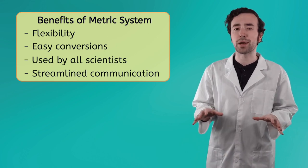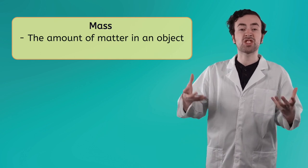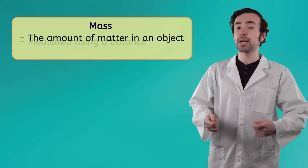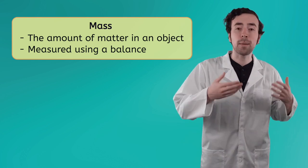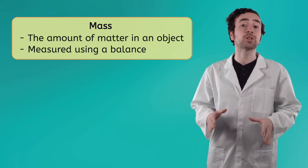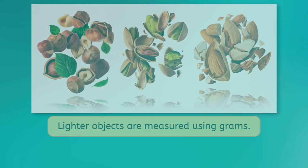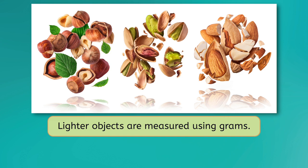All right, now that we know the benefits of the metric system and we understand it a little better, let's discuss how to use it. First up: mass. Mass is the amount of matter or stuff in an object. Scientists measure mass by a tool called a balance. There's lots of different kinds of balances, but by far the easiest one to use is a digital balance. When measuring mass, as with any measurement, pay close attention to the unit of measurement, which will be displayed on the balance. Lighter objects like leaves or almonds are typically measured using grams, with a typical leaf weighing in at one to five grams.